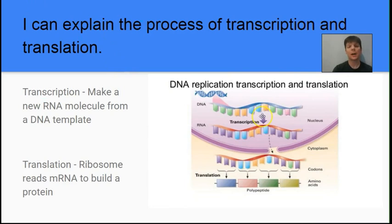Our next learning target is to explain the process of transcription and translation. Transcription means we are building a new RNA molecule from a DNA template — the DNA is pre-existing and is used to make a new RNA molecule. This is happening inside the nucleus. Once the RNA is produced, it leaves the nucleus and travels to the ribosome, where the information in the messenger RNA is read to put together a polypeptide, which is a chain of amino acids.